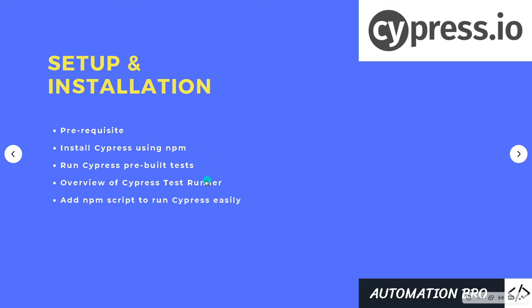When a test is running we will take a look at the Cypress test runner and see how that works and what are some of the functionalities of the Cypress test runner. And then at the end we're going to add our npm script to run Cypress easily instead of keep running the npx cypress command.